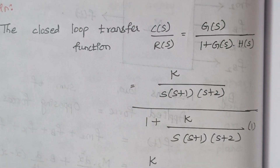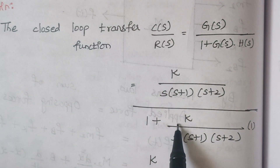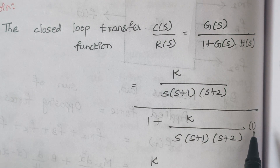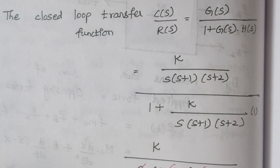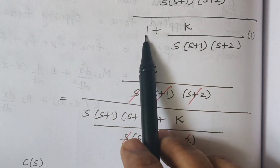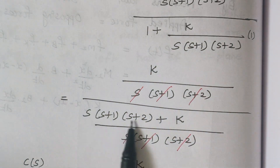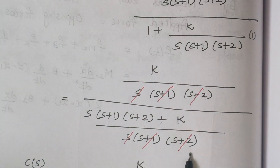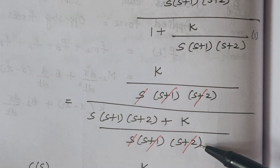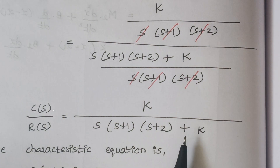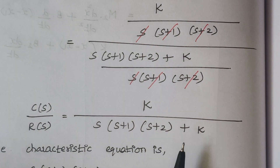The value of G(s) is given, so we substitute it. Since the feedback is unity, H(s) = 1. The next step is to take the LCM for the denominator term. When you take the LCM, those three terms get multiplied with the one, and after simplification the denominator terms cancel, giving us K / [s(s+1)(s+2) + K] as our closed loop transfer function.